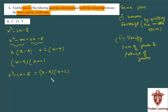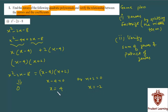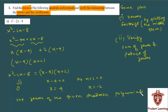Is quadratic polynomial ke yeh do factors ho gaye. Now this polynomial is going to be 0 when either x − 4 = 0 or x + 2 = 0. x − 4 = 0 gives us x = 4, and x + 2 = 0 gives us x = −2. So x = 4 and x = −2 are the zeros of the given polynomial. Therefore, the zeros of the given quadratic polynomial are 4 and −2.